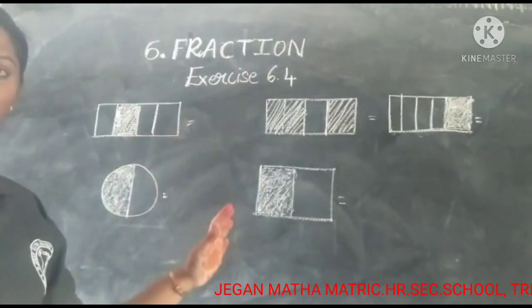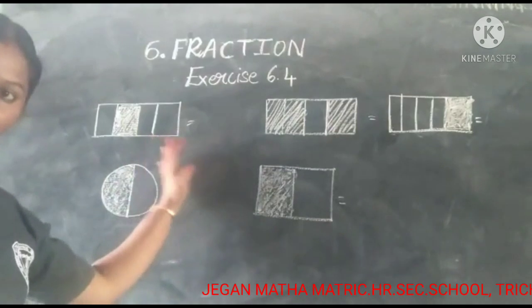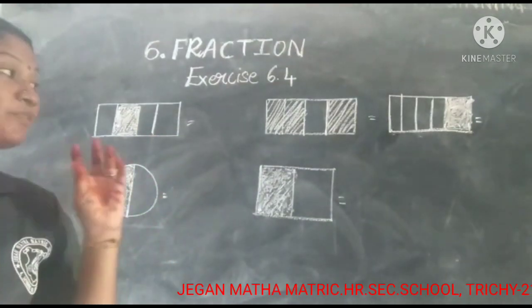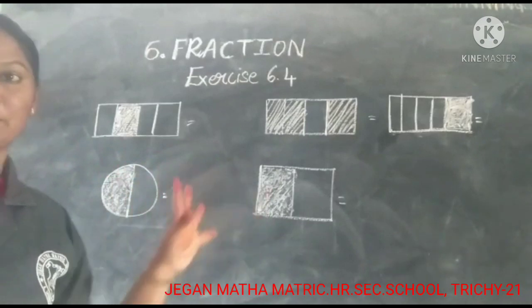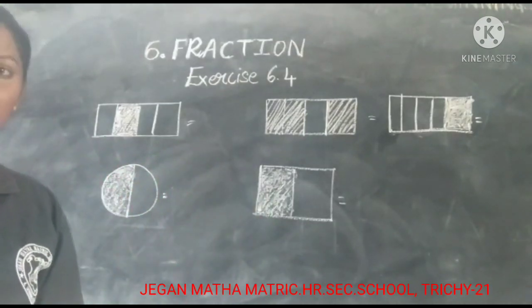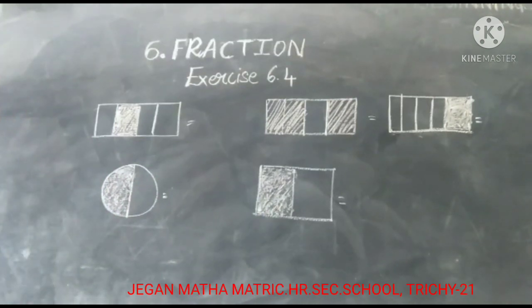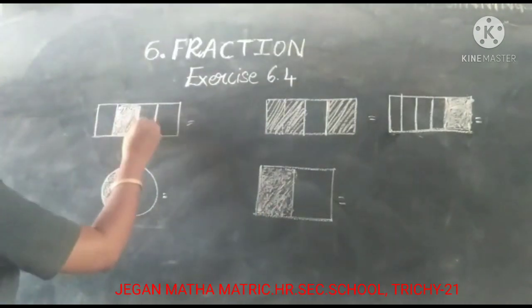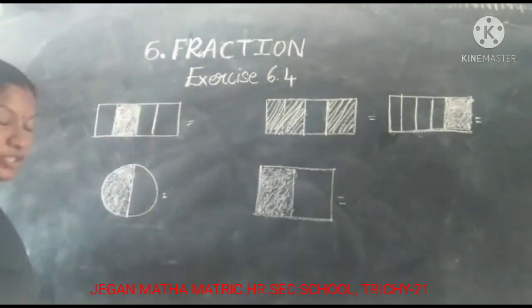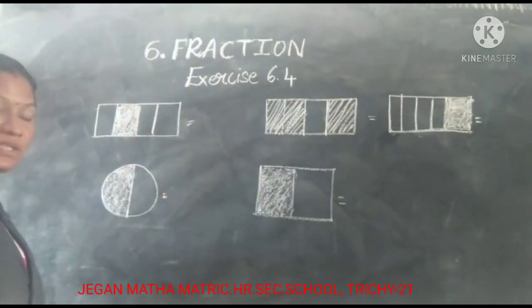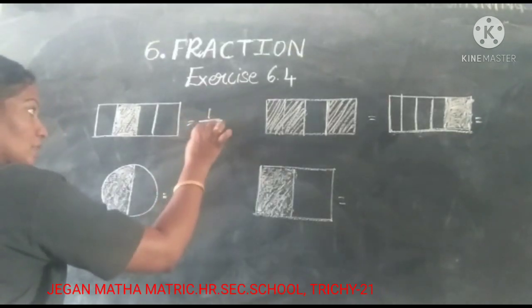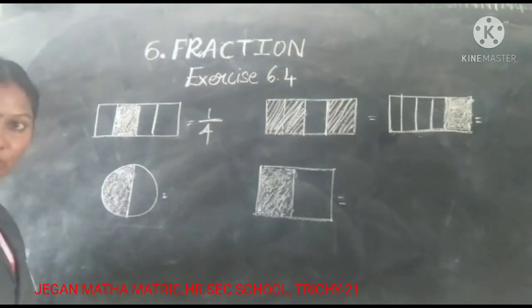The pictures are given and already shaded. Now you are going to find the fraction for each picture. Let's see the first one — one, two, three, four. So four equal parts, one part is shaded. So the quarter part is shaded — one-fourth. The fraction of the shaded part is one-fourth.